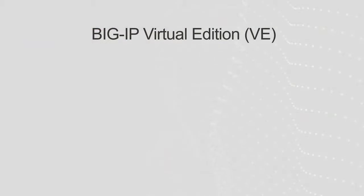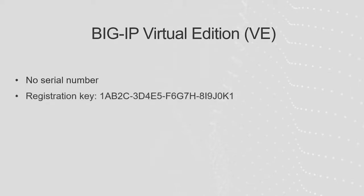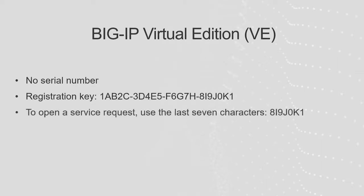Unlike hardware platforms, a BIG-IP Virtual Edition system does not have a serial number. Instead, the BIG-IP VE system has a registration key made up of 27 alphanumeric characters. If you encounter any issues with your BIG-IP VE system that require F5 support assistance, you'll need to provide the last seven characters in the registration key.